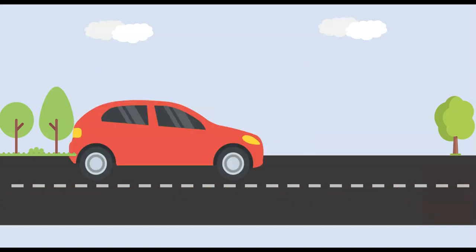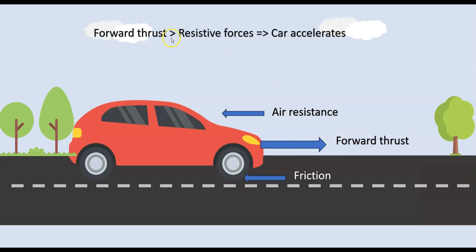Now let's look at the horizontal forces acting on the car. The force from its engine, the forward thrust, moves it towards the right. As it moves, the car experiences resistive forces both from the air resistance and the frictional force between the tires and the road.